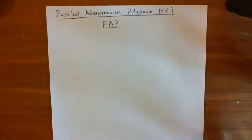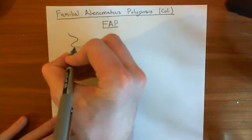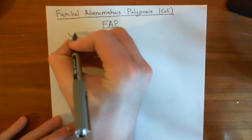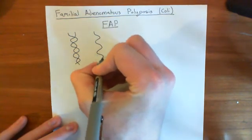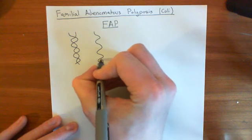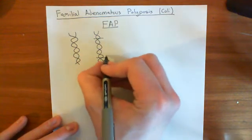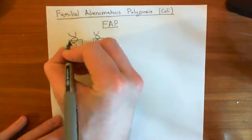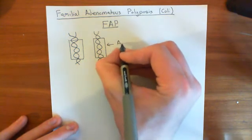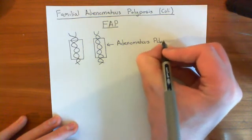What happens in familial adenomatous polyposis is that you get loss of function mutations in the adenomatous polyposis coli gene. You have two genes for adenomatous polyposis coli — here are the two genes, one paternal and one maternal — so you have two homologous chromosomes and therefore two copies of the APC, or adenomatous polyposis coli, gene.